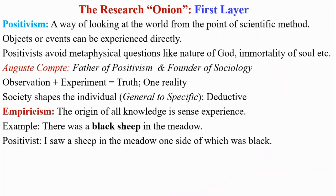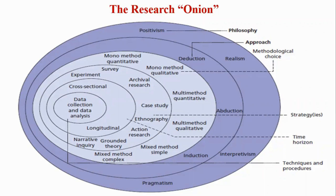Now we will discuss the first layer. In the first layer of Research Onion, Saunders gave four paradigms: Positivism, Realism, Interpretivism, and Pragmatism. We will discuss all these four paradigms one by one.